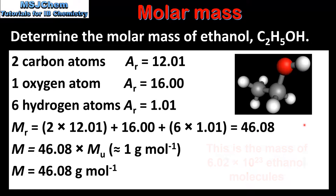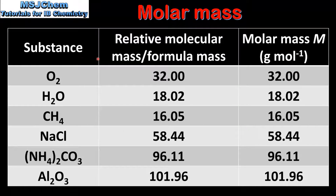Next we'll look at some more examples. In this table we have the substance, the relative molecular mass or relative formula mass, and the molar mass. Molecular oxygen, O2, has a relative molecular mass of 32.00 and a molar mass of 32.00 grams per mole. Water, H2O, has a relative molecular mass of 18.02 and a molar mass of 18.02 grams per mole. Methane, CH4, has a relative molecular mass of 16.05 and a molar mass of 16.05 grams per mole.